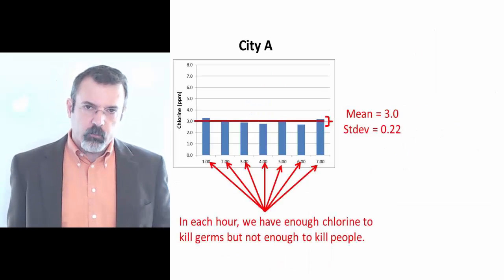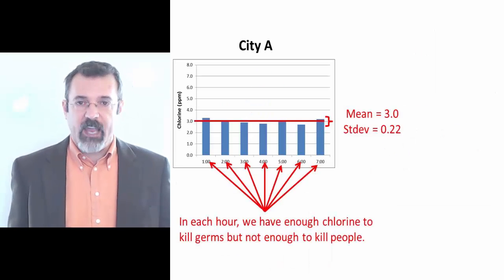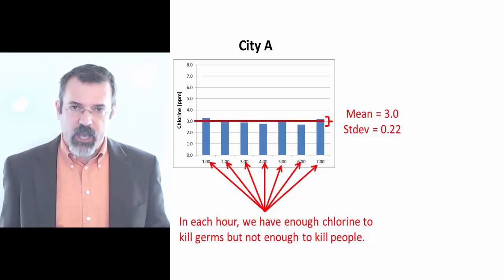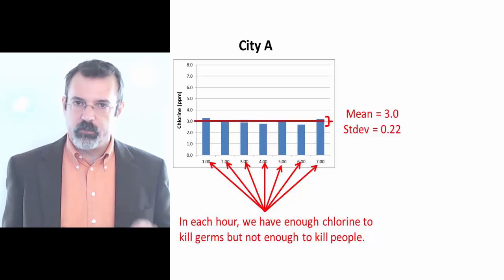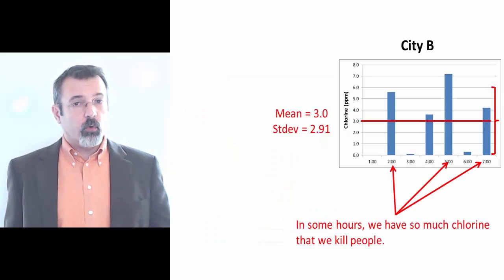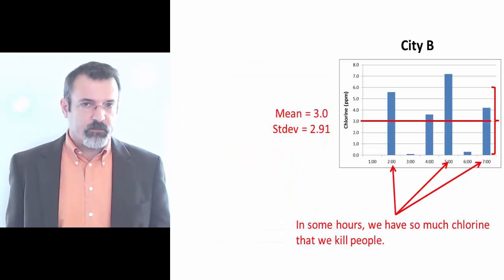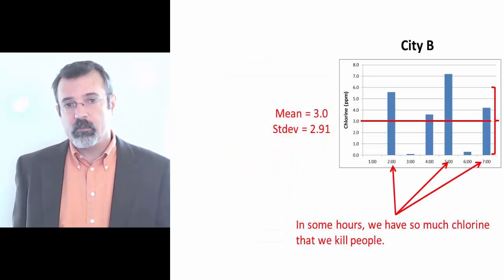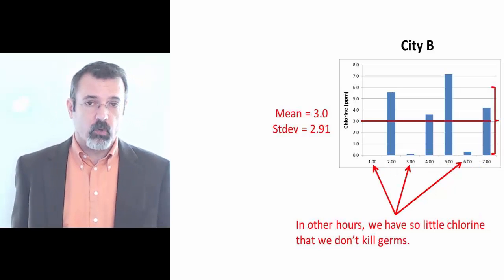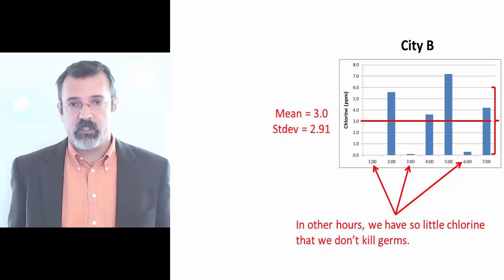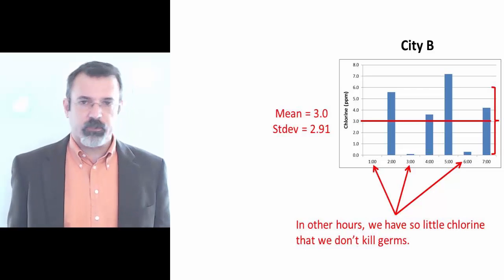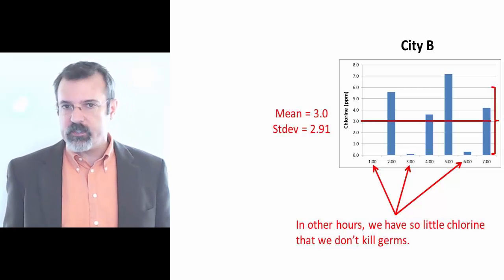In city A, in each hour we have almost exactly three parts per million of chlorine — enough to kill the germs, but not so much that we kill the people. Meanwhile, in city B, although we also average three parts per million, in some hours we have so much chlorine that we poison the people, and in other hours we have so little that the water is contaminated. Sometimes it's not just the average that matters, but also the standard deviation.